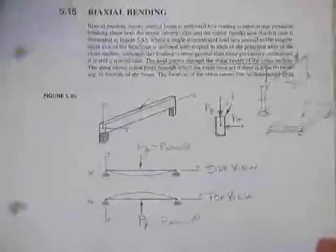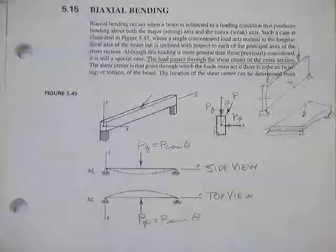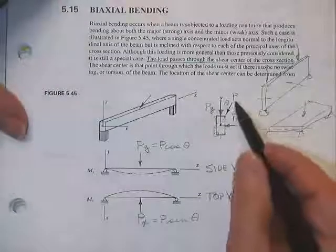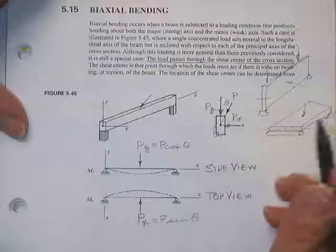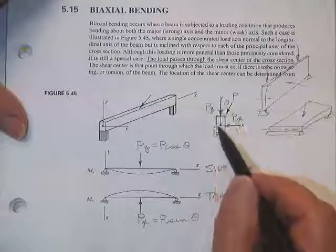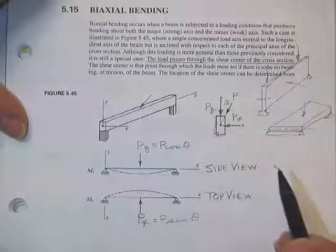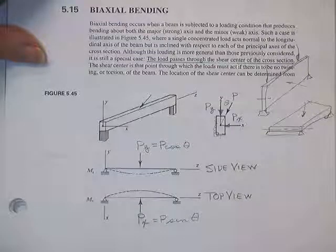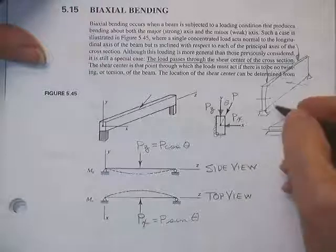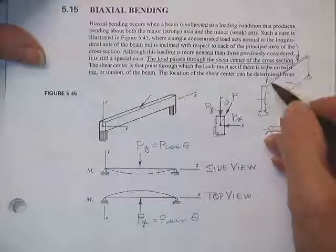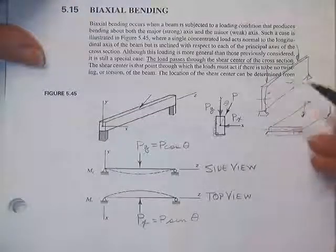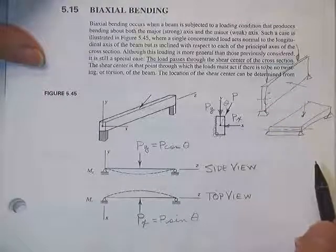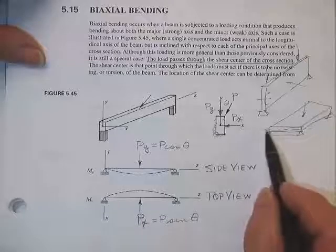We're going into beams bent about more than one axis. You can get biaxial bending because someone has a load at an angle, or it's possible that dead loads and wind loads cause bending about both the strong and the weak axis. We've already handled bending about the strong axis due to loads in that direction, but we really haven't studied what to do with a beam bent about its weak axis — it behaves somewhat differently.